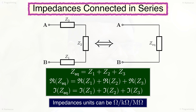Consider the electric circuit shown in the figure with three impedances connected in series. When an electric potential is applied between nodes A and B, an electric current will flow through the closed circuit in all three impedances. The total impedance is the sum of all three impedances. As impedance is a complex quantity, the equivalent real part is the sum of all three impedances' real parts, and the equivalent imaginary part is the sum of all three impedances' imaginary parts.